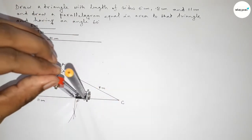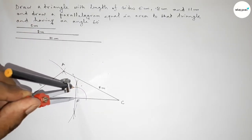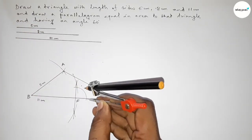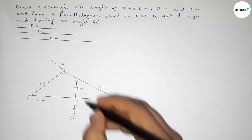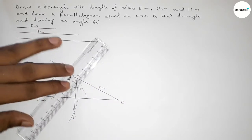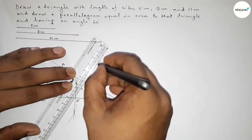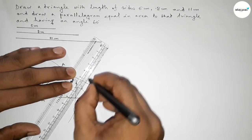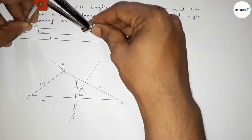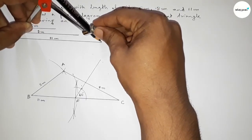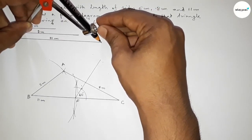Next, we draw a 60 degree angle at point F. Placing the compass on F and taking any length, we draw an arc. With the same length, we mark off the arc to locate the 60 degree position and draw the line. We now have a 60 degree angle at F.